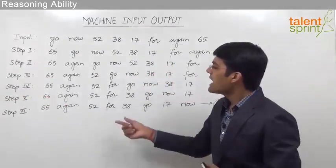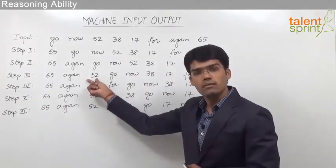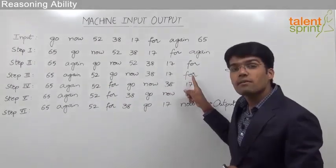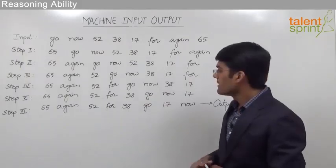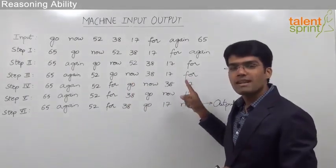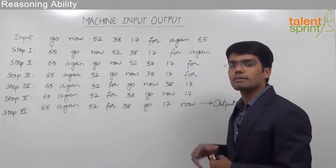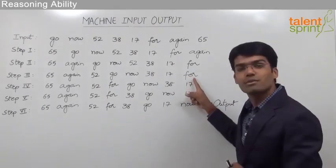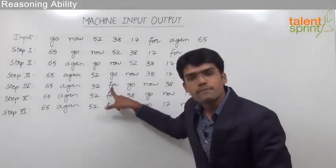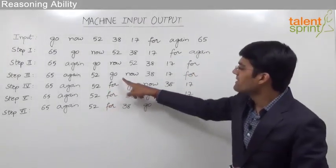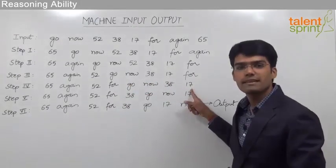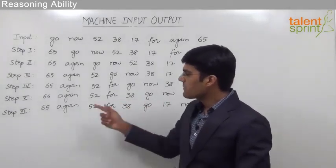Moving on to step 4, after 52 we need a word, and that word should be 'for' as we are following alphabetical order. Among the remaining words — go, now, and for — the word that comes first alphabetically is 'for.' So 'for' is brought from the last place in step 3 to the fourth place in step 4, and the remaining elements — go, now, 38, and 17 — are simply pushed aside.